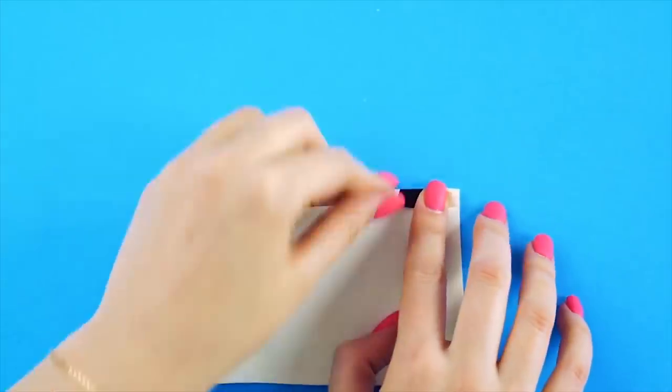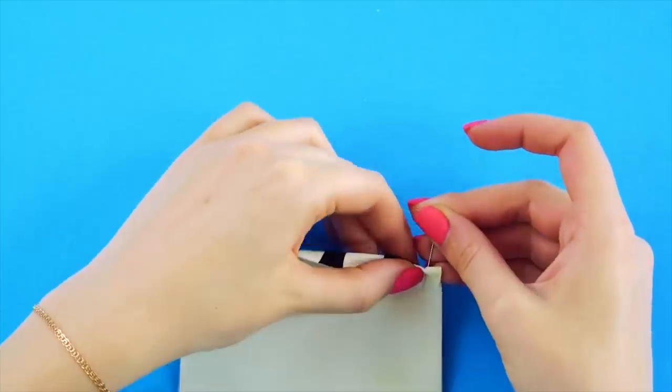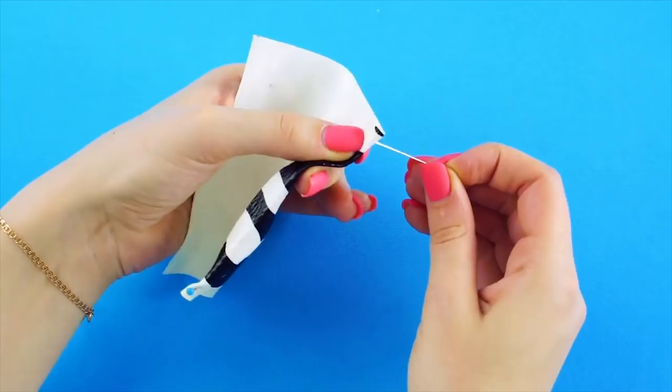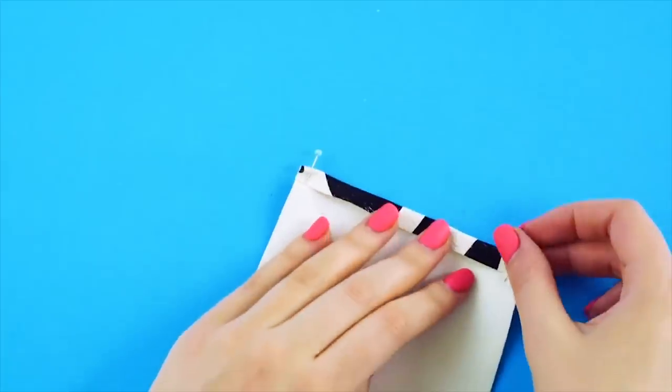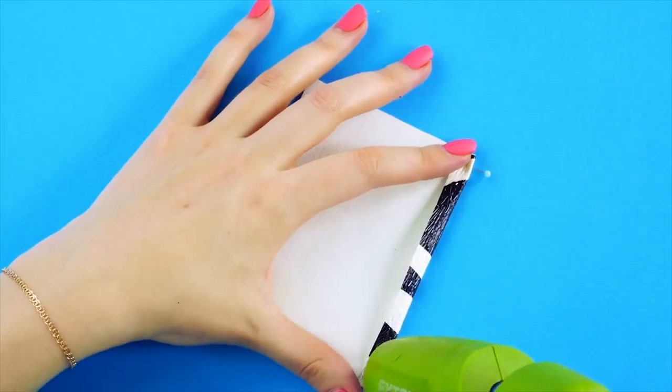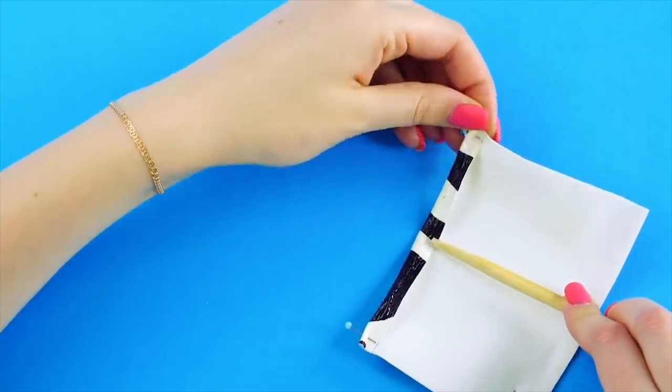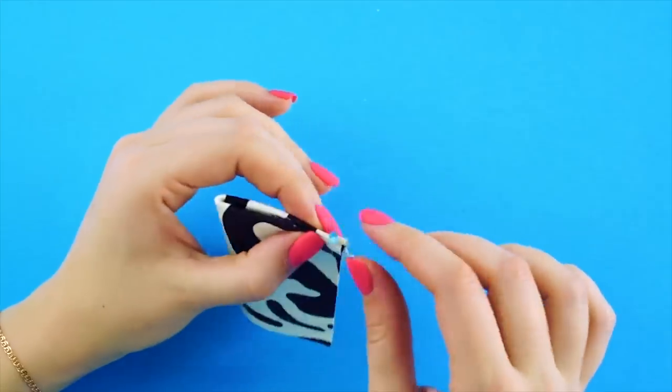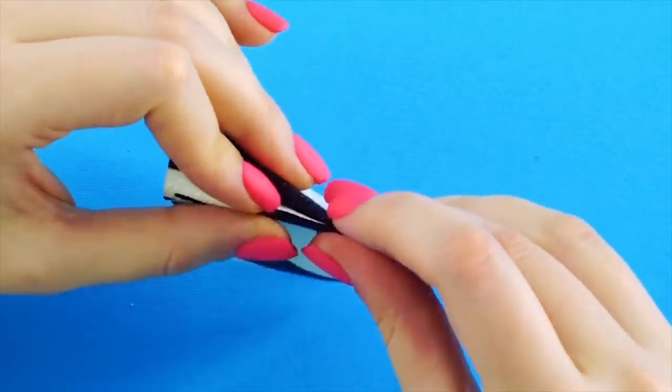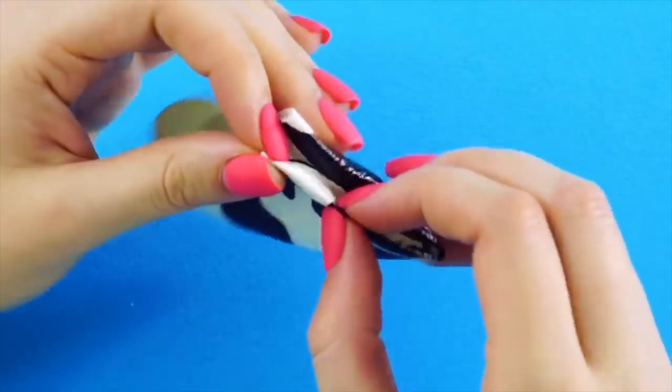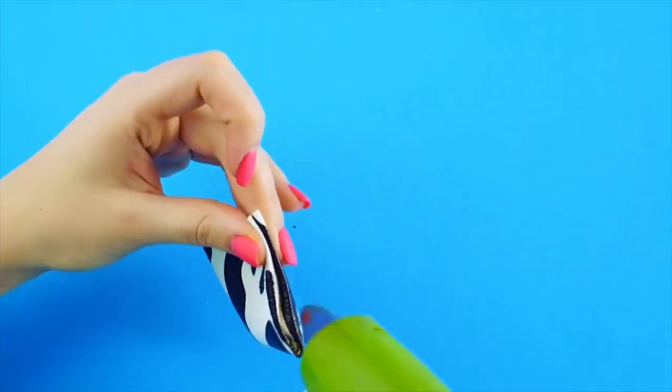Fold one side over and pin it like this. Apply hot glue along the edge. Fold it and glue it together. Remove the pins. Now do the same on the other side. Fold in the edge and hot glue the edges together.